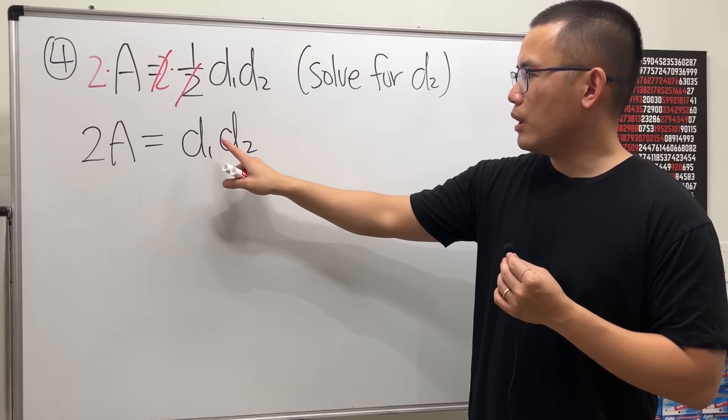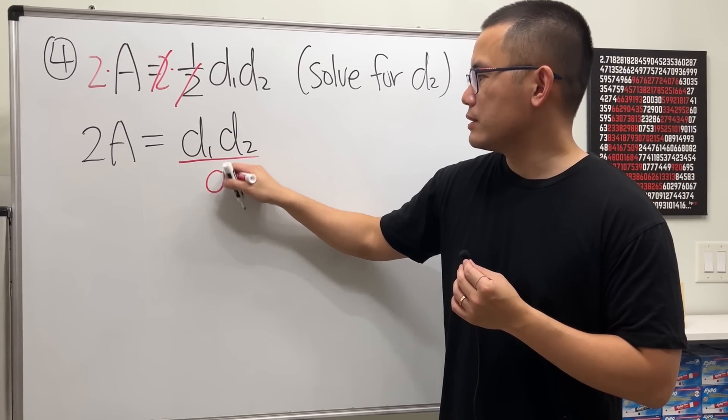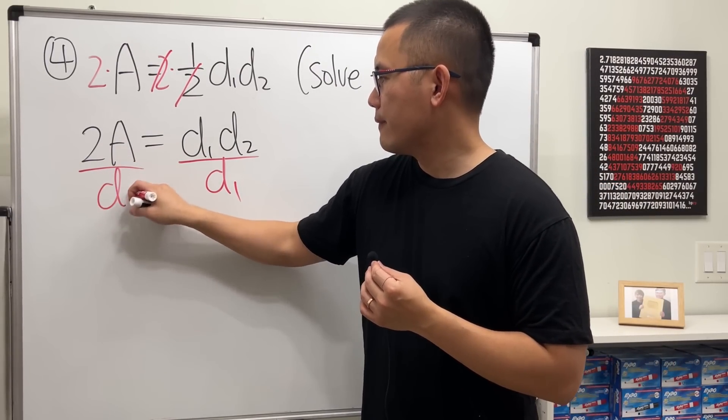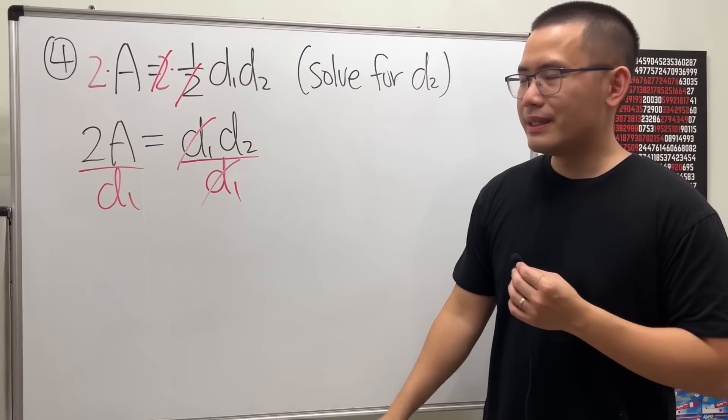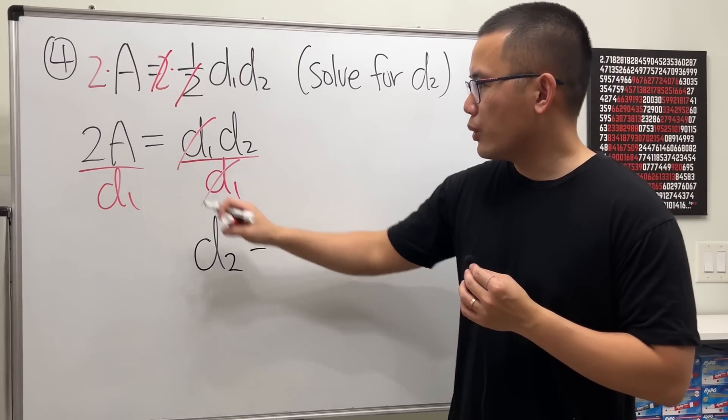Then, to get rid of d1 so we can get d2 by itself, let's just divide both sides by d1. So this and that cancel. d2 now is by itself. Let me write it down right here. And that's equal to that.